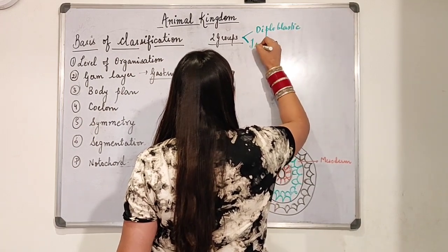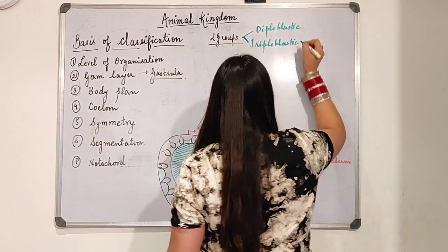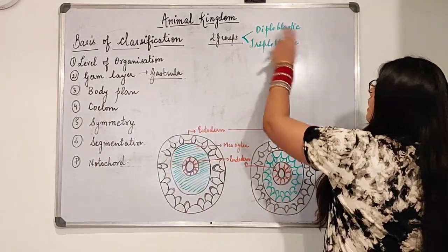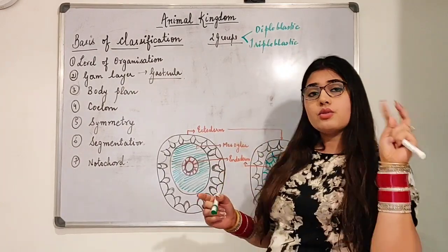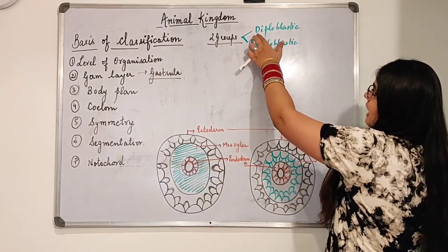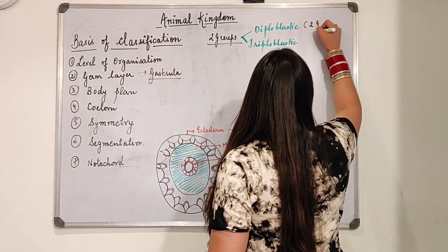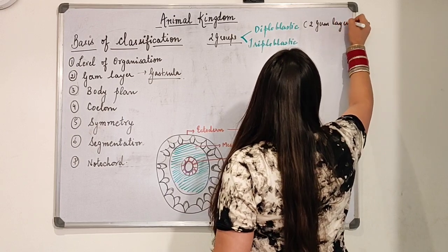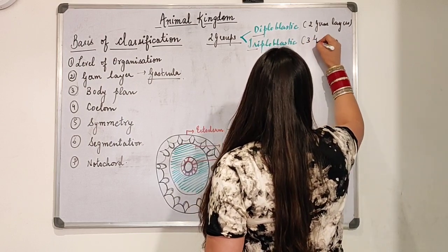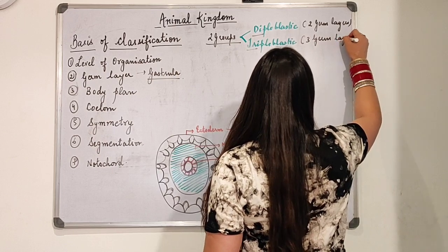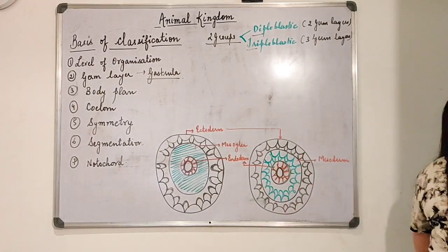In biology, you have to break up a particular term into parts. Diploblastic: 'di' means two, so it has two germ layers. Triploblastic: 'triplo' means three, so it has three germ layers. Now, what are the names of these layers?